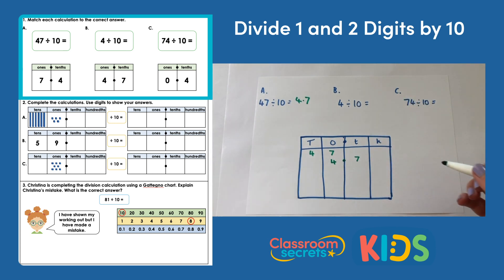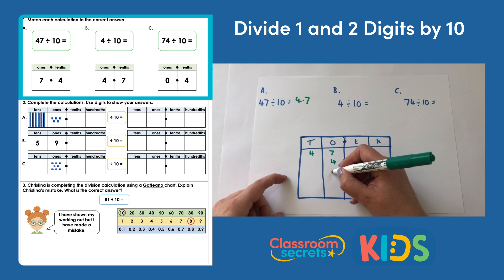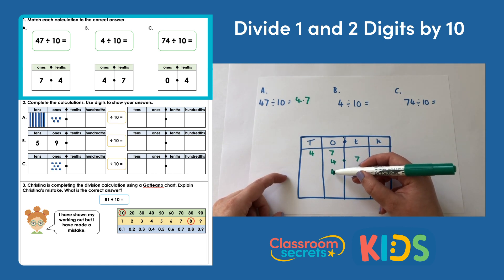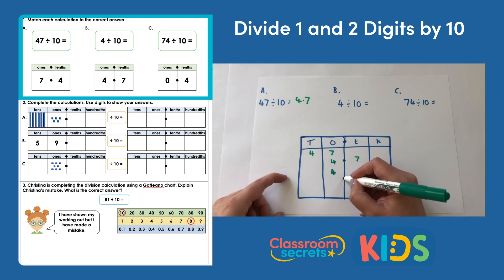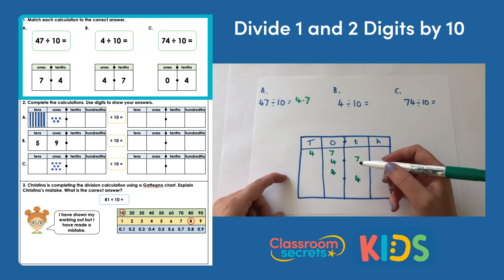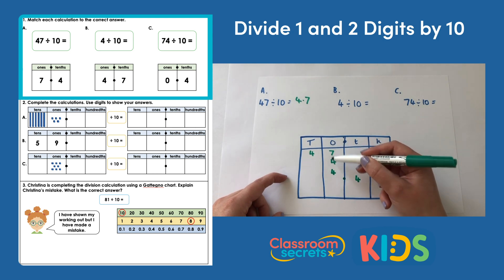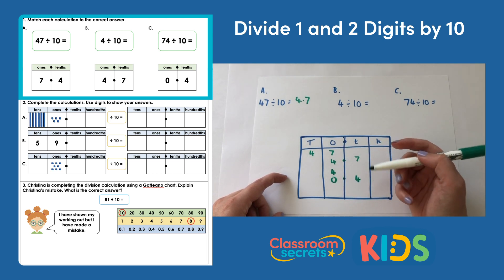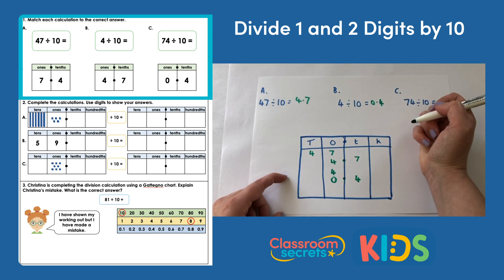Moving on to B: 4 divided by 10. I have 4 here and I'm going to move it one column to the right. Make sure the decimal point's there. Because we have something in the tenths column and nothing in our ones column, zero becomes a placeholder. So 4 divided by 10 equals 0.4.